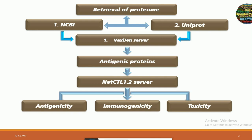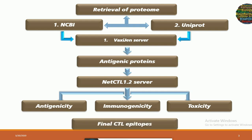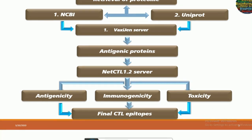Then we will select the best CTL epitope based on three different parameters: antigenicity, immunogenicity, and toxicity. That means the CTL epitopes that we will be selecting must be antigenic, immunogenic, and non-toxic at the same time. This is how we will get our final cytotoxic T-lymphocyte epitopes for vaccine designing.